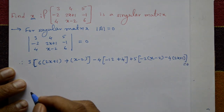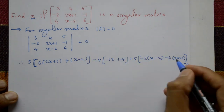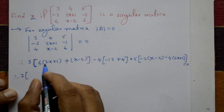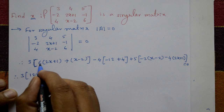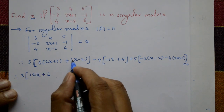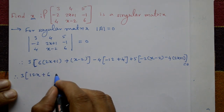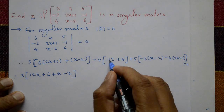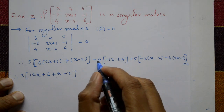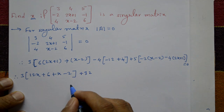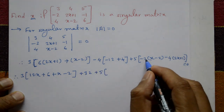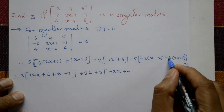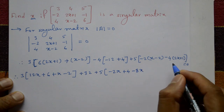That is equal to 0. Therefore 3 into: inside the bracket 6 into 2 is 12x plus 6 plus x minus 2; then minus 12 plus 4 is minus 8, minus 8 into minus 4 is plus 32; next is plus 5 into: minus 2(x minus 2) plus 4, then minus 8x and minus 4.